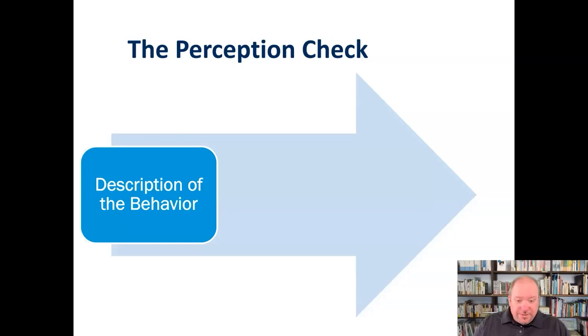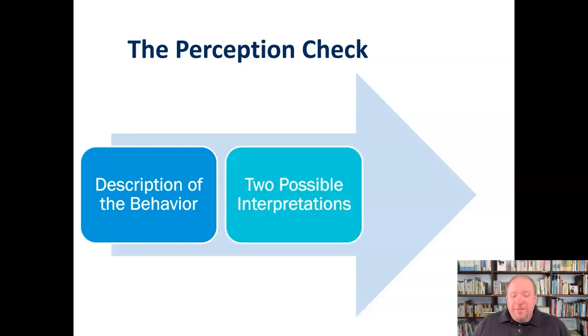Step two is to provide two possible interpretations for that behavior, and it's important that you have two possible interpretations. It's not really important that you get one of them right, that one of them be the actual thing that's happening necessarily or the reason that it's happening, but having two interpretations lets that person know that you're open to possibilities here.